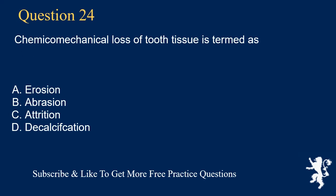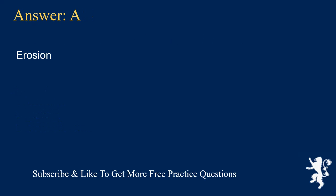Question 24. Chemico-mechanical loss of tooth tissue is termed as: A. Erosion, B. Abrasion, C. Attrition, D. Decalcification. Answer: A. Erosion.